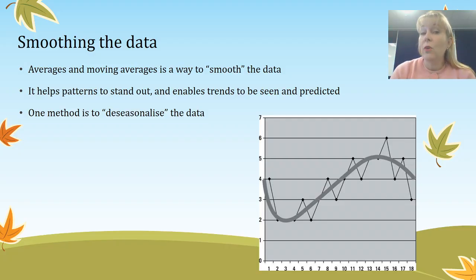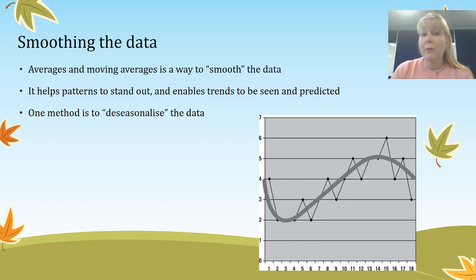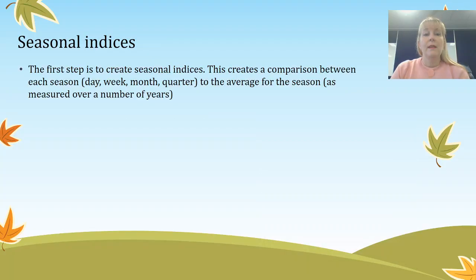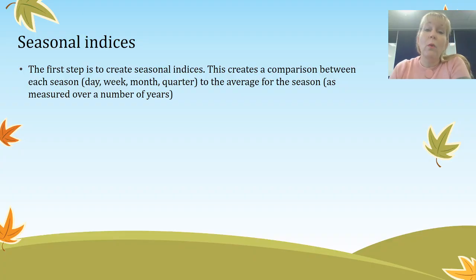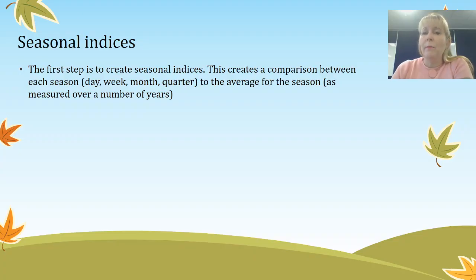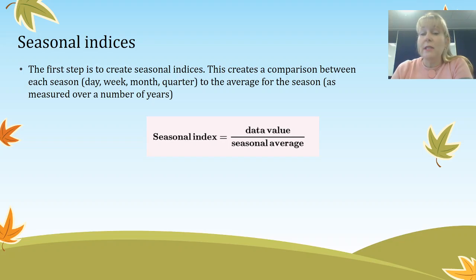We're going to look at the technique called de-seasonalising data, which means taking the impact of seasons out. I'm going to do two worked examples: a simple one and then a more complex one using the QCAA's exemplar. The first step is to create seasonal indices, which creates a comparison of every season — whether that's a day, week, month, or quarter — to the average for the whole season, measured over a number of years. The formula is: seasonal index equals data value divided by the average for the season.